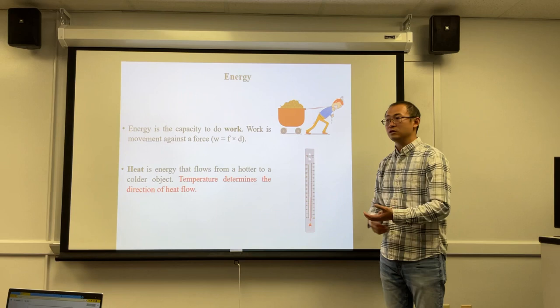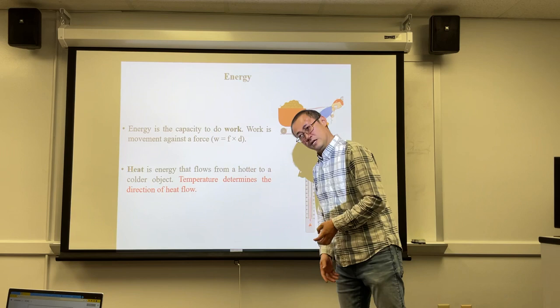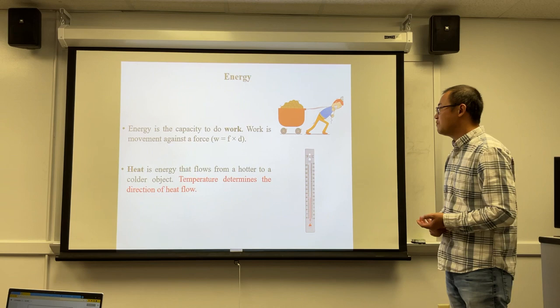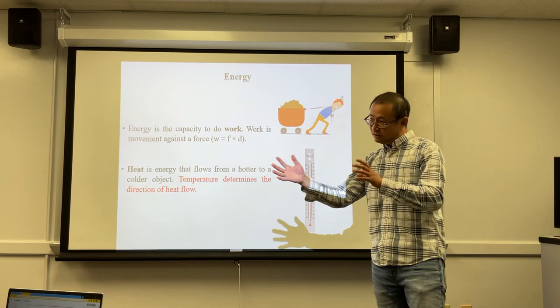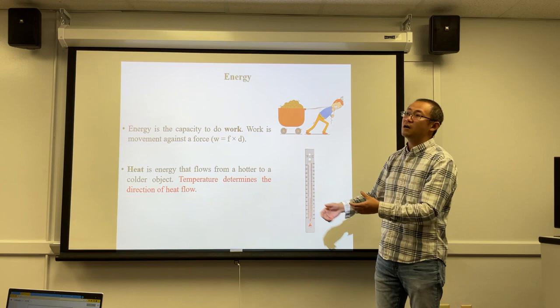Another type of energy is heat. Heat is something that flows from a hotter to a colder object. Temperature is the only factor that determines the direction of heat flow — some energy transfers from the hotter object to the colder object, and that is called heat. It is also energy.